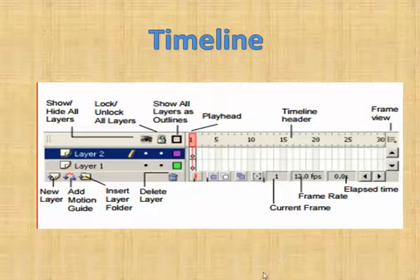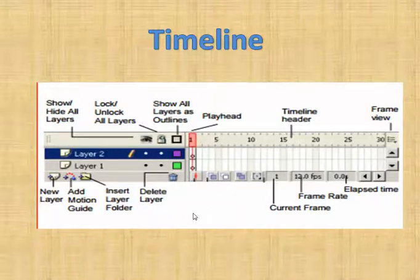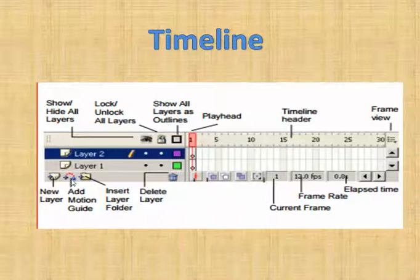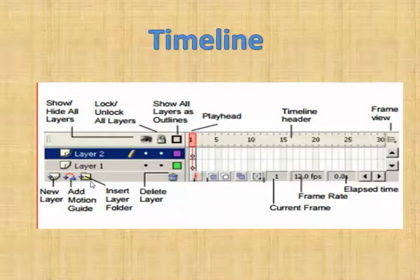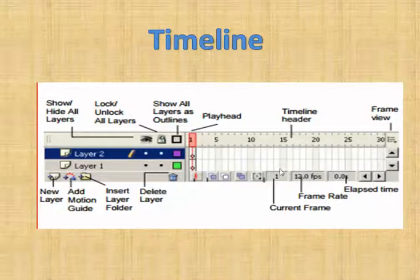Let us understand the timeline in a more elaborate manner, because this is the main part where you will be working in Flash. Clicking the first button adds a new layer. The next button is a motion guide, which is one of the advanced features we will learn in detail. The third button inserts a layer folder, and the fourth button will permanently delete a layer. In this case we have two layers: layer 1 and layer 2.